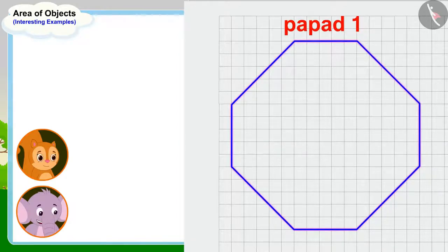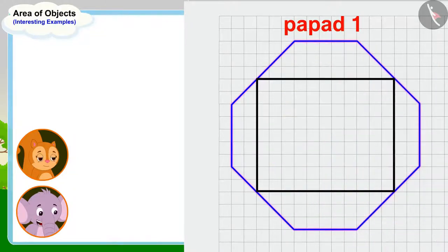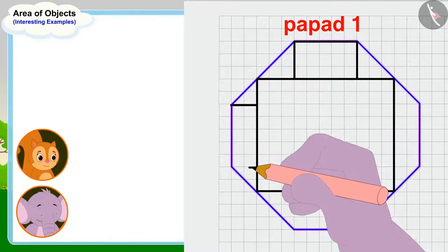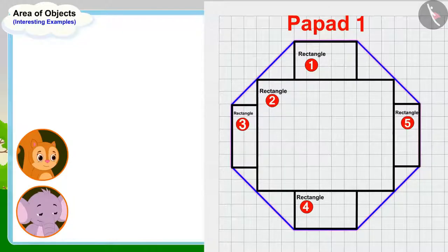Let's first find the area of this shaped papar. Let me first draw this rectangle in this shape here so that I can find it easy to find the area. Appu made a rectangle like this in the shape of the first papar.